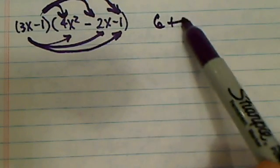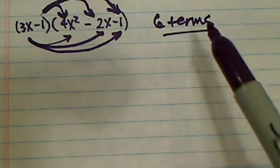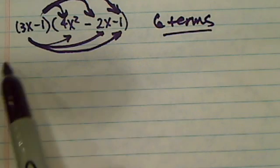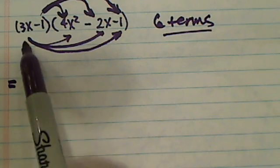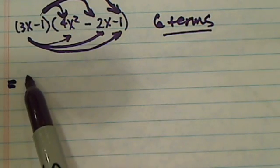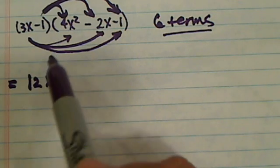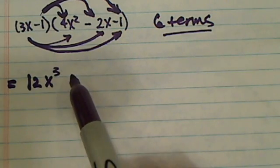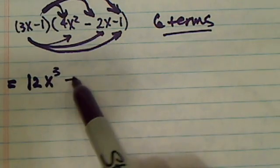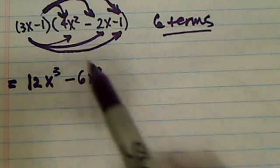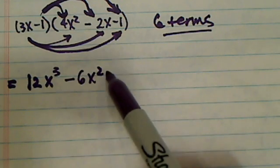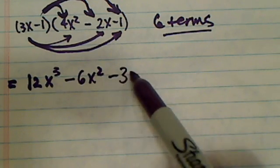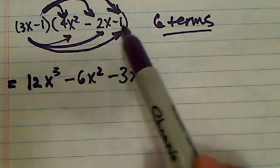So totally you should have 6 terms, and then you're going to simplify those 6 terms, so let's try it. 3x times 4x² that's 12x³, right, that's the first term. Next one I have minus 6x², and then I have minus 3x because it's 3x times minus 1.